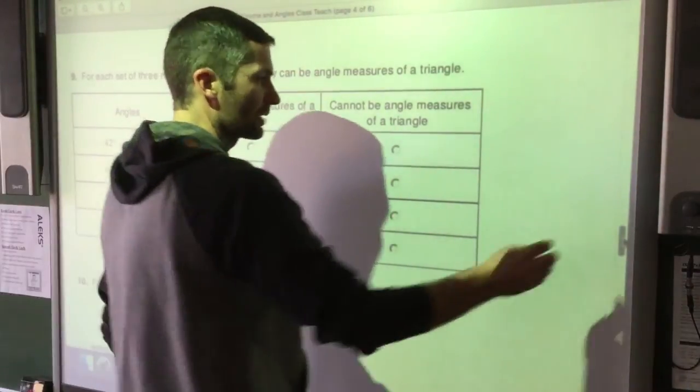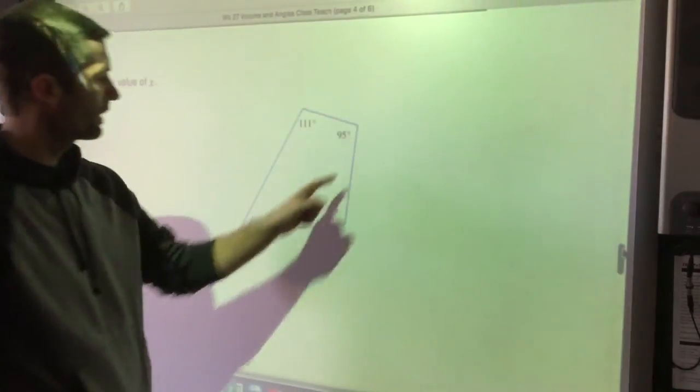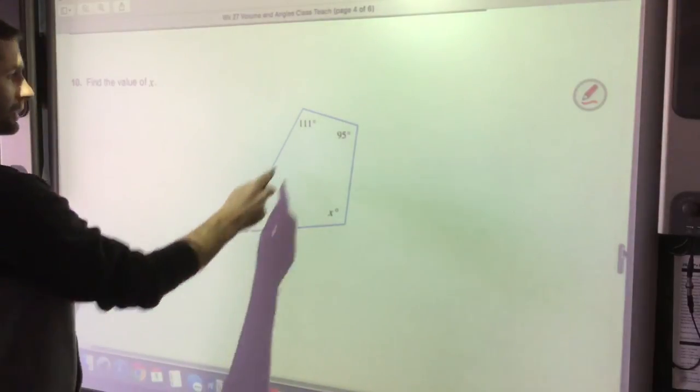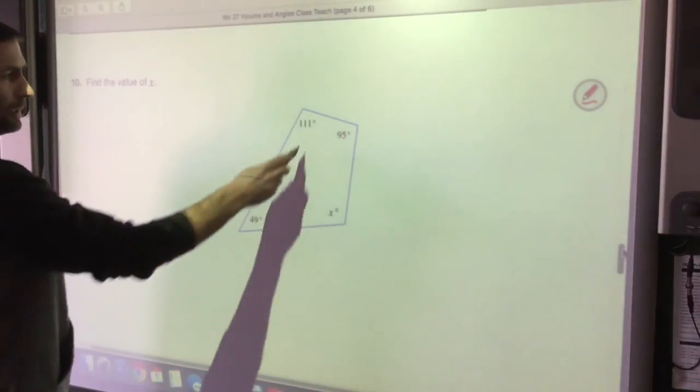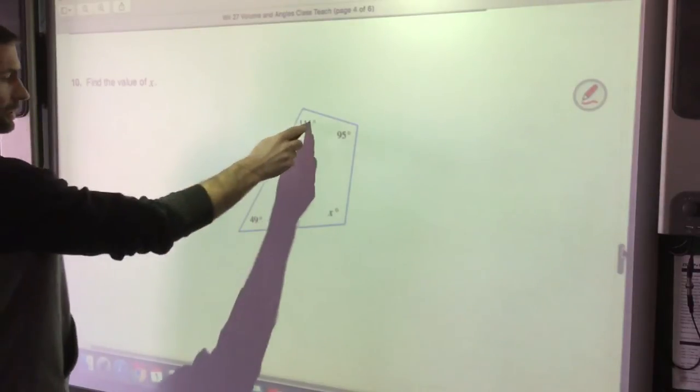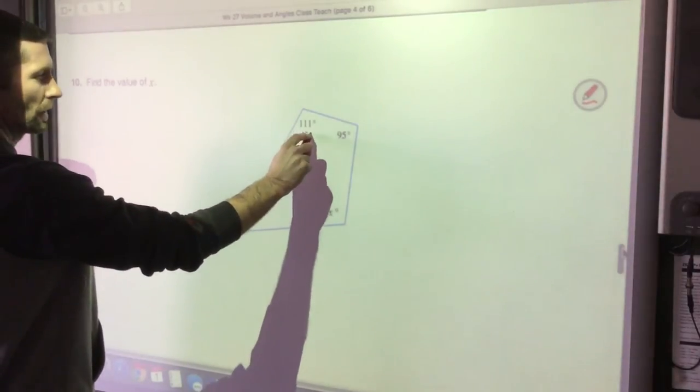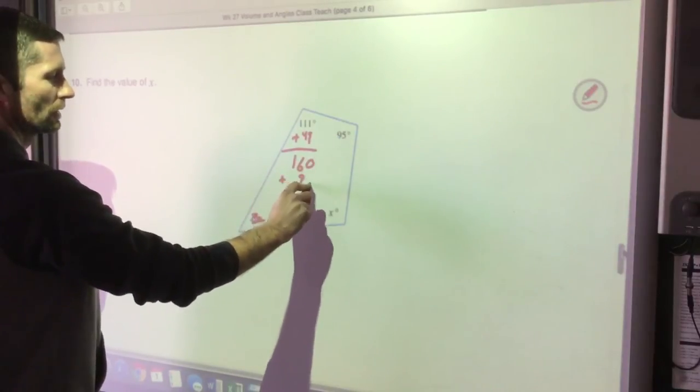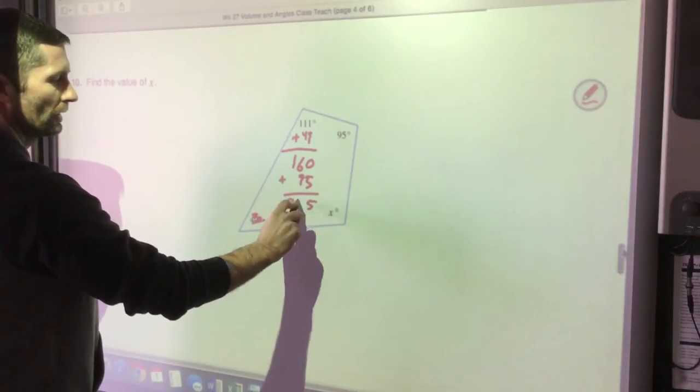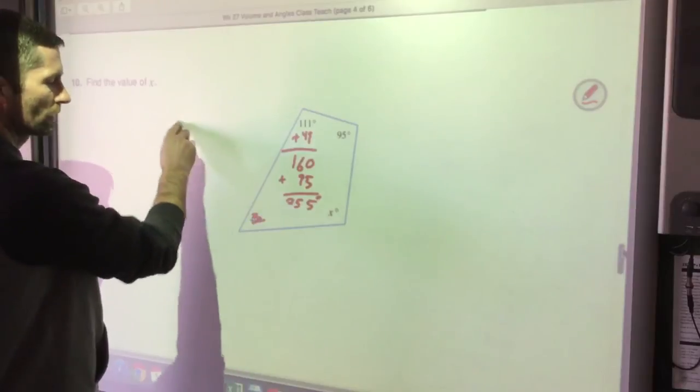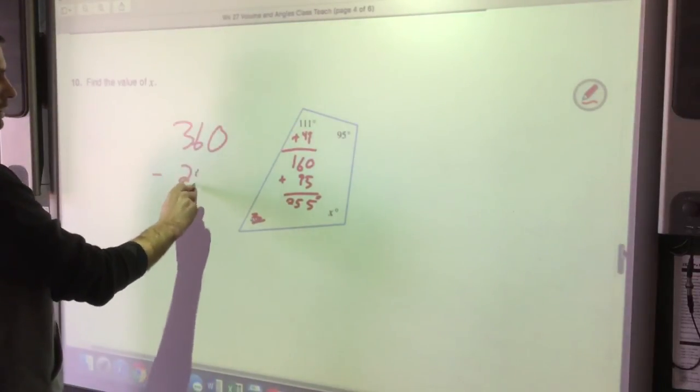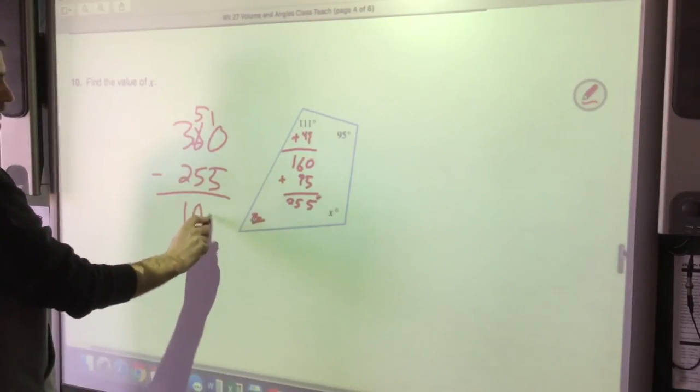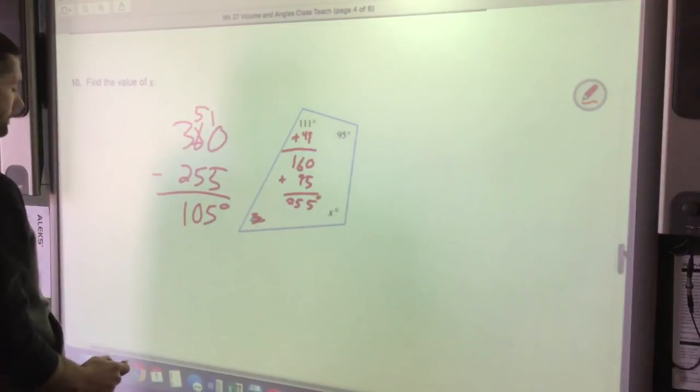Alright, last problem, find the value of x. We've got to figure out what kind of shape it is first. It has four sides, so it's a quadrilateral. So quadrilaterals, they all add up to 360. So I could do 360 minus this, minus this, minus this. I'm going to add them first and subtract that from 360. So 111 plus 49 gives you 160 degrees plus another 95 gives you 255 degrees. So far we have 255 degrees if it's 360 total. So let's borrow, 105 degrees, which makes sense.